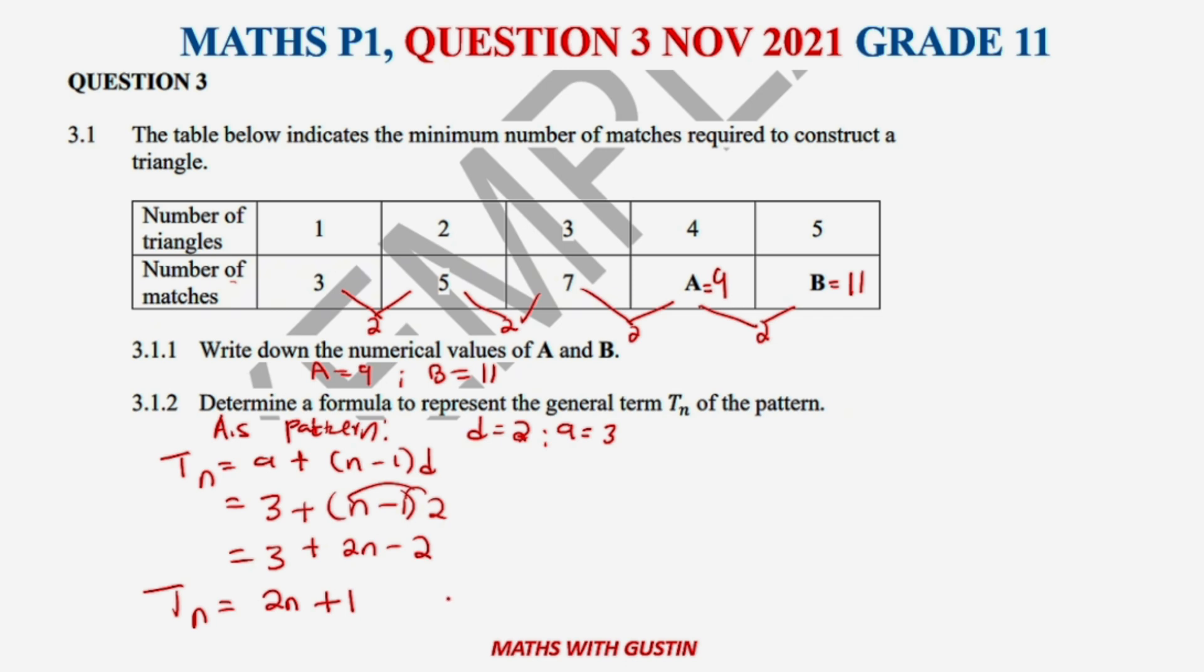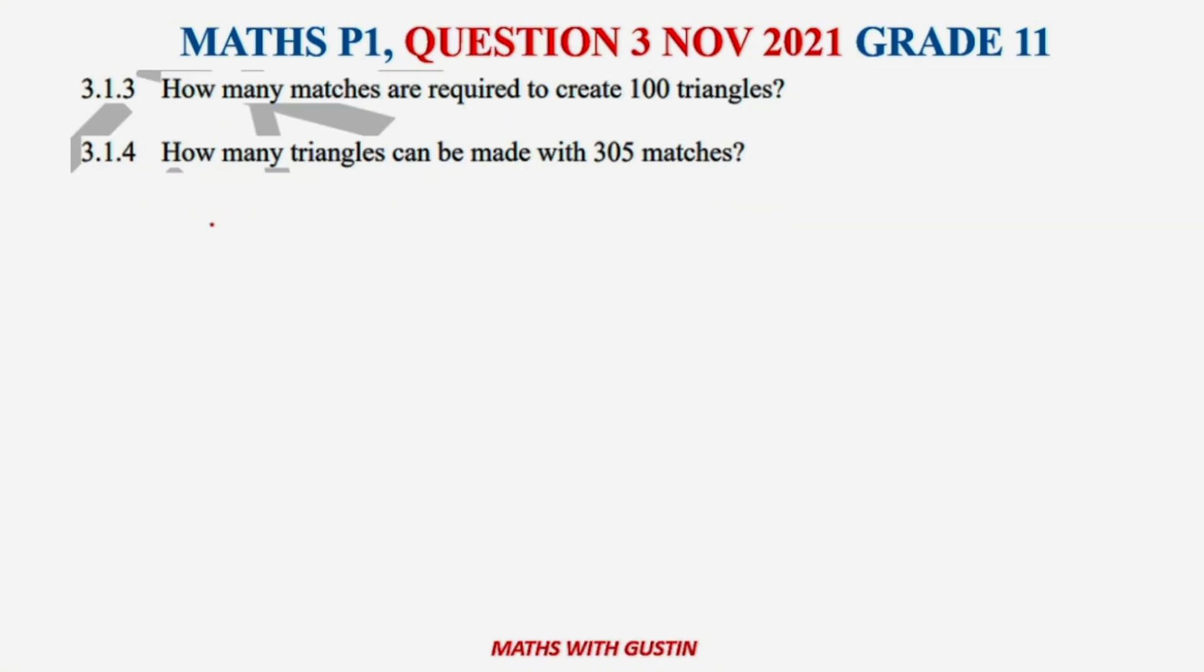Let's move on to question 3.1.3. It says how many matches are required to create 100 triangles? It means that our n is going to be 100. So what is our formula? Formula is given by Tn = 2n + 1.